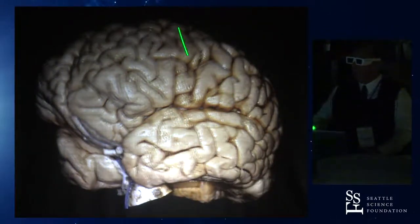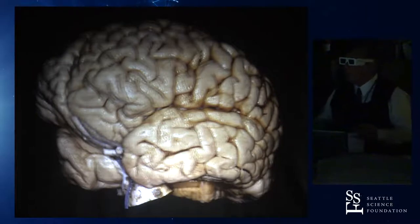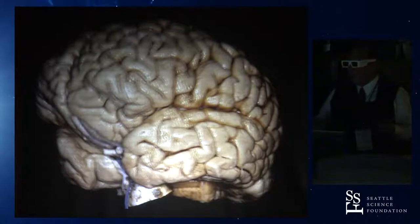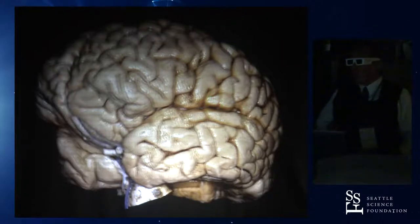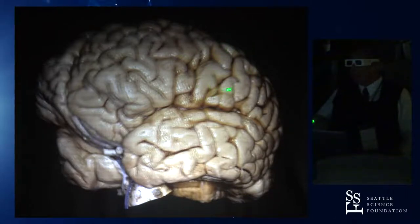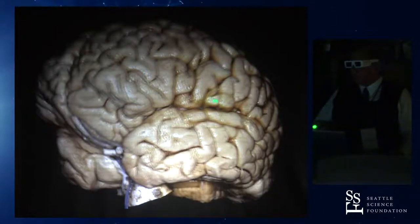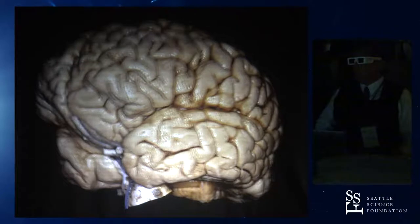The central sulcus never reaches the Sylvian fissure, because you always have a connection between the pre- and postcentral gyrus that we call the subcentral gyrus — previously called the inferior frontoparietal connection or Broca's connection, now just subcentral gyrus. We neurosurgeons should follow the nomenclature proposed by Ono and Yasargil. The subcentral gyrus is delineated anteriorly by the anterior subcentral and posteriorly by the posterior subcentral rami of the Sylvian fissure. The so-called central lobe always has an elliptical shape excavated by the central sulcus.